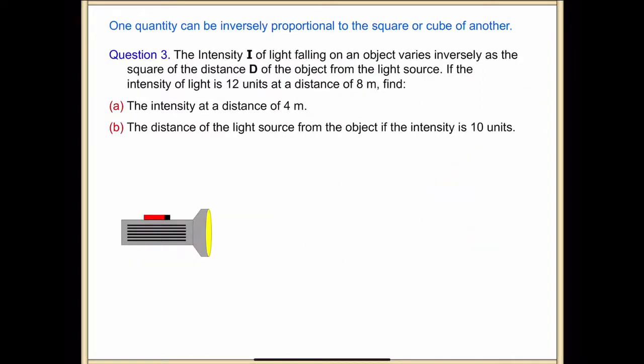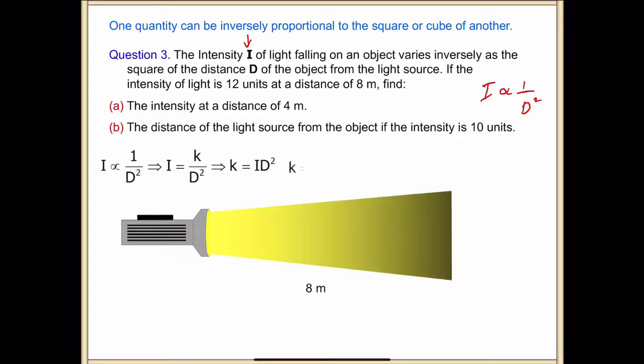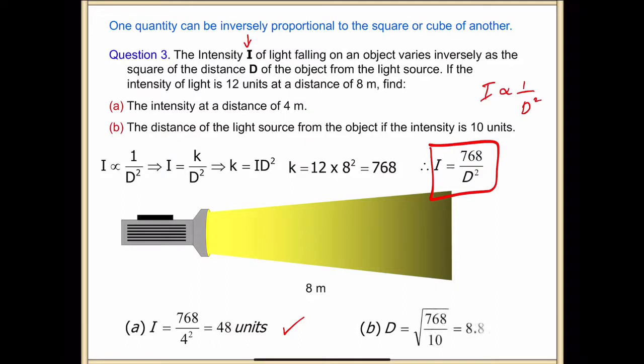One quantity can be inversely proportional to the square or cube of another. We talked about this yesterday with direct proportion. The intensity i of a light falling on an object varies inversely as the square of its distance. i varies inversely as the square of its distance, simple as that. Relationship. 48 and 8.8, that's the two answers you should have.